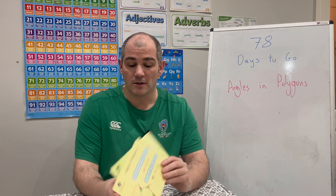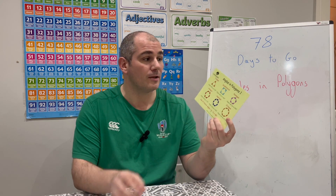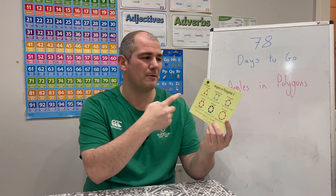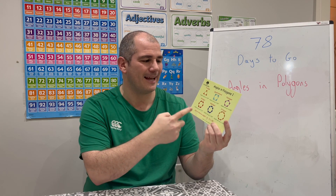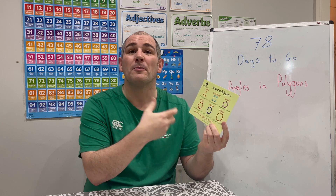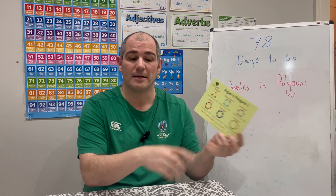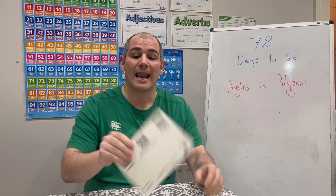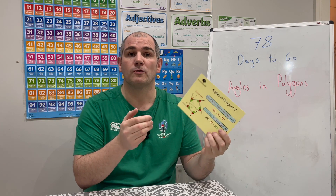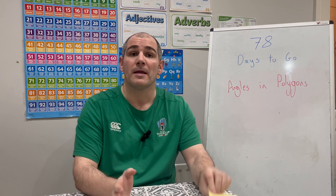If you've got the revision cards, revision card number five — angles and polygons — will be quite useful. It goes through all the different polygons from triangle, quadrilateral, pentagon, hexagon, heptagon and octagon: what the sum of the interior angles are and how to find them. There's also revision card number six which goes through interior and exterior angles, and that might be useful as well.